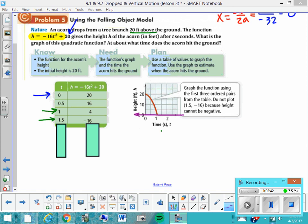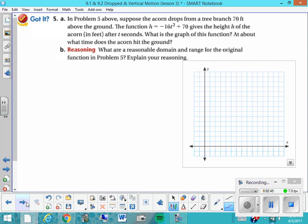Let's do one together. Okay, this one I would like you to copy down the function. So here we have the same acorn, but it's dropping from a higher branch. And so the function, in theory, remains the same, but now we've got that plus 70 as our c value, because it's starting from a tree branch at 70 feet. It says, what is the graph of the function? And at about what time does the acorn hit the ground? And then we're going to go on to discuss a reasonable domain and range for the original function in problem five. So let's get started.